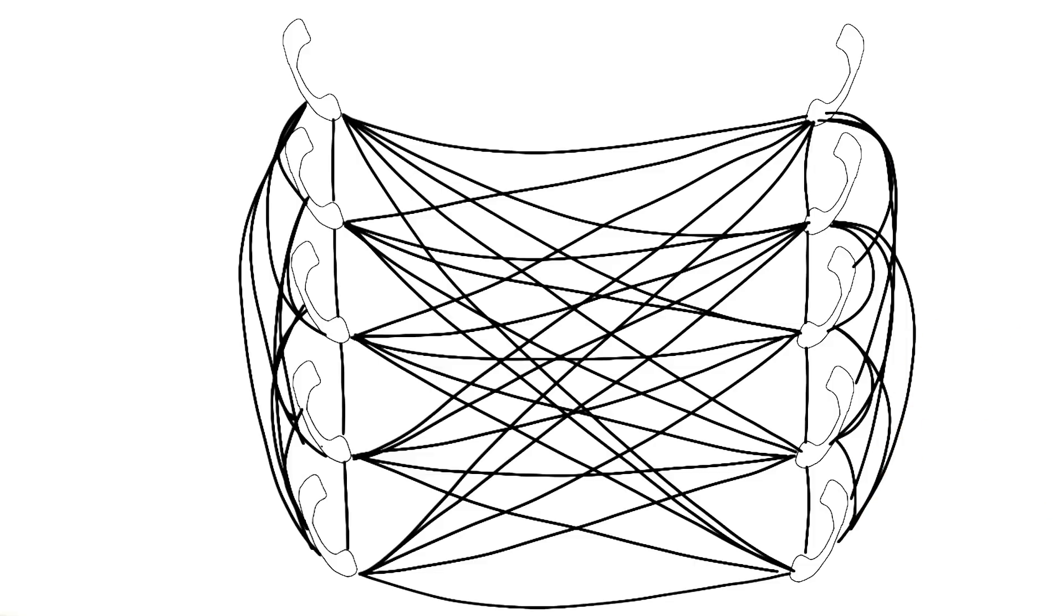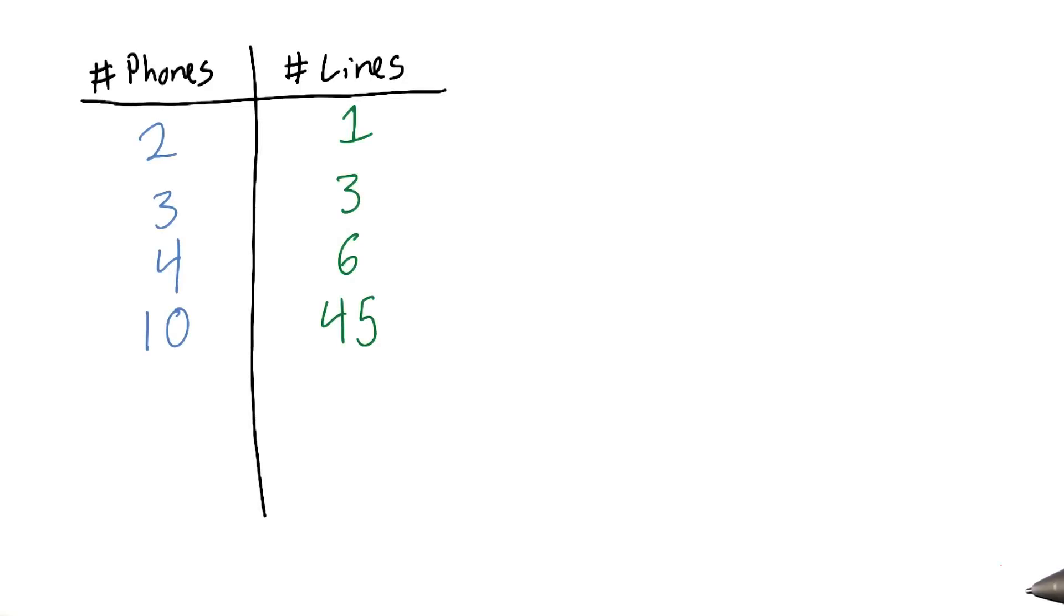So, you can imagine what 11 phones, or 15 phones, or 20 phones, or 2,000 phones would be like. So, here's a table of what we've learned so far. As it turns out, the number of connections is ultimately defined by the equation n times n minus 1 all over 2, where n is the number of phones.